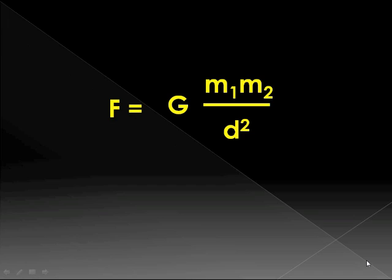Newton gave us the formula F equals G m1 m2 over d squared, but he didn't have instruments sensitive enough to measure the constant G. He didn't know what it was.